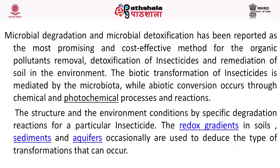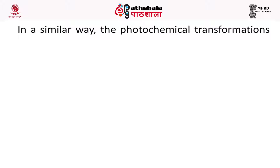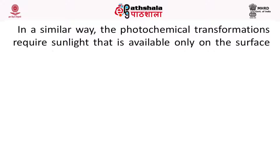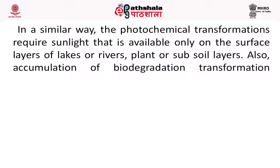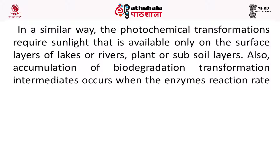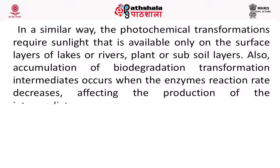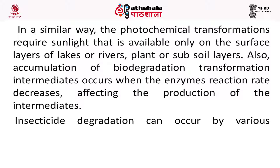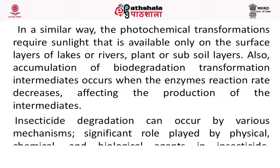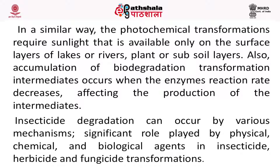The structure and environmental conditions determine specific degradation reactions for a particular insecticide. The redox gradients in soil, sediments and aquifers are occasionally used to deduce the type of transformation that can occur. Photochemical transformation requires sunlight, which is available only on the surface layer of lakes or rivers, plants or subsoil layers. Accumulation of biodegradation transformation intermediates occurs when enzyme reaction rates decrease. Insecticide degradation can occur by various mechanisms, with significant roles played by physical, chemical and biological agents in insecticide, herbicide and fungicide transformation.